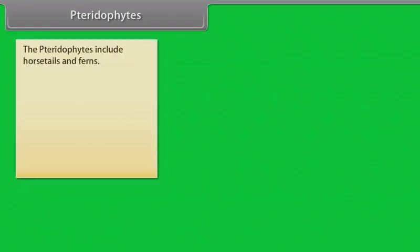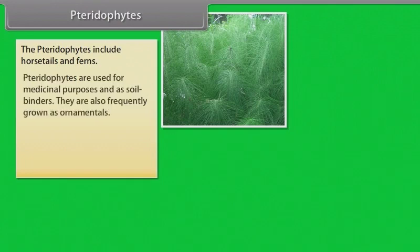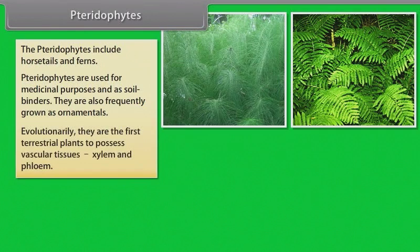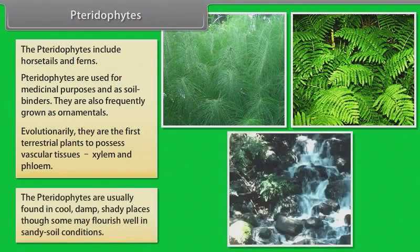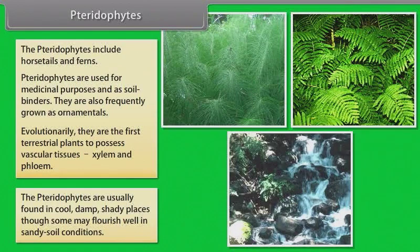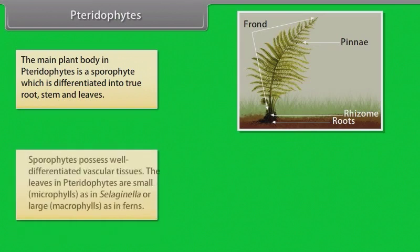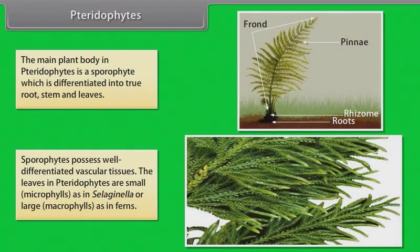The pteridophytes include horse tails and ferns. Pteridophytes are used for medicinal purposes and as soil binders. They are also frequently grown as ornamentals. Evolutionarily, they are the first terrestrial plants to possess vascular tissues, xylem and phloem. The pteridophytes are usually found in cool, damp, shady places though some may flourish well in sandy soil conditions. The main plant body in pteridophytes is a sporophyte which is differentiated into true root, stem and leaves. Sporophytes possess well-differentiated vascular tissues. The leaves in pteridophytes are small, microphylls as in Selaginella, or large macrophylls as in ferns.